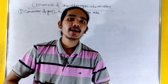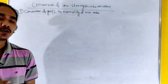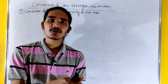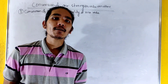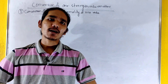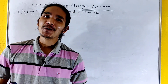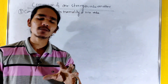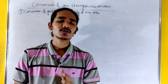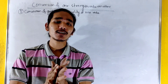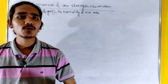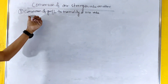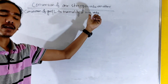We are going to discuss how we can change the strength and exchange the strength. Today's topic is the conversion of one strength into another. Number 1 is the conversion of gram per liter to normality and vice versa.